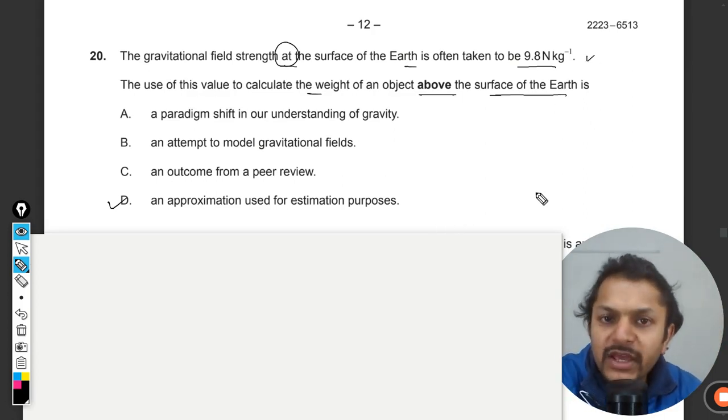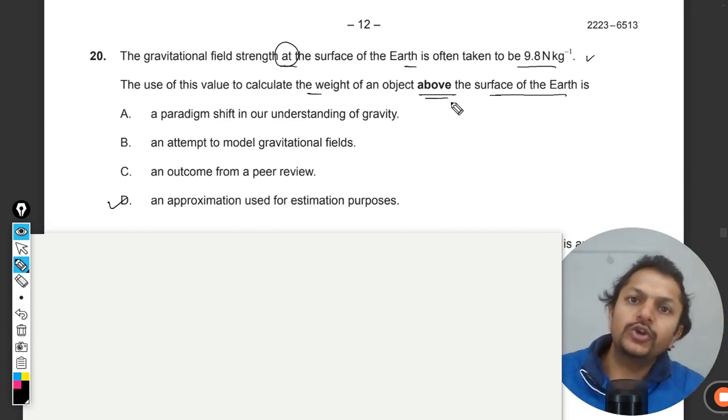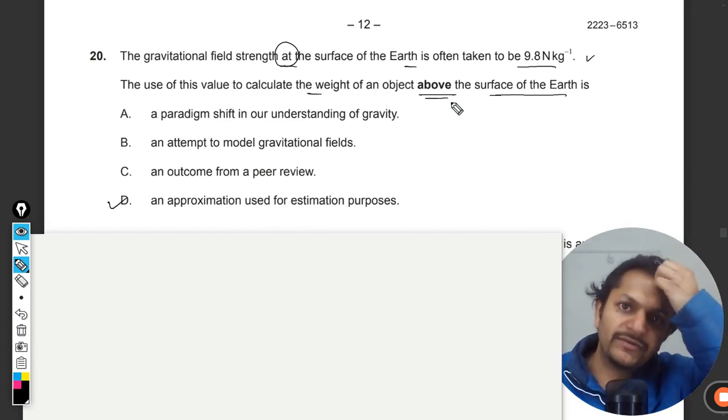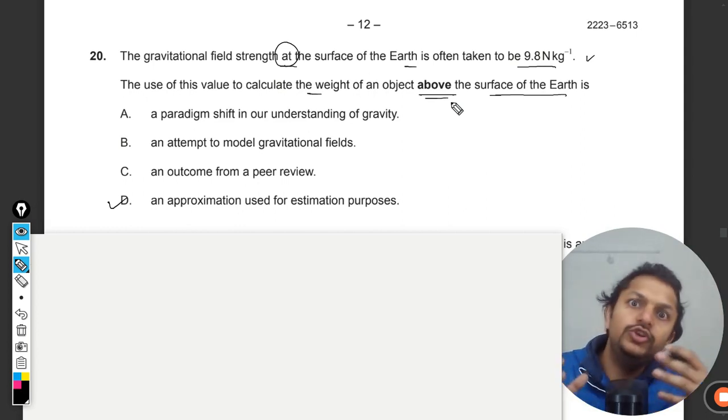But what about a little above the surface? Let's say you are on a building which is like 200 meters above the surface of the Earth, 100 meters above the surface of the Earth. So what do you think—would you be using the 9.8 still, or you should not be using it?